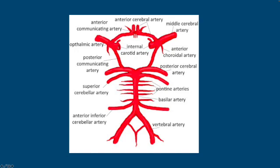Which are here and here. And these bifurcate into the middle cerebral artery and the anterior cerebral artery. And that accounts for the anterior circulation within the brain.